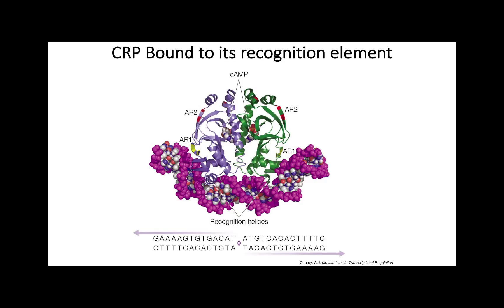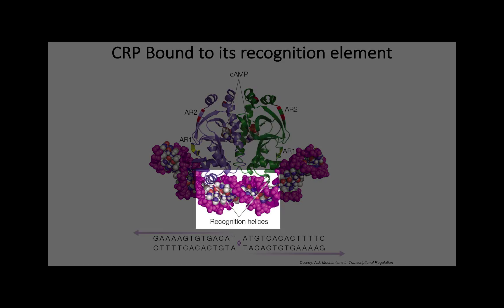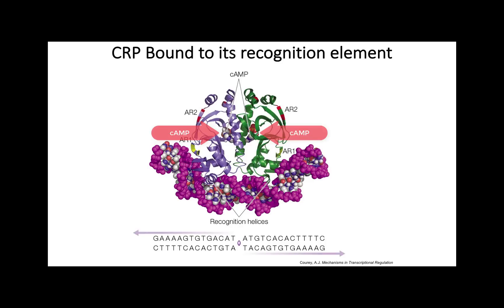Here we see the structure of CRP bound to the CRP site from the lac operon. Like most bacterial transcription factors, it binds to DNA as a dimer. We see two identical subunits, one in blue and the other in green, that come together via a dimerization interface. Each subunit has a recognition helix as part of a helix-turn-helix motif that binds in the major groove of the DNA. We can also see cyclic AMP bound to each subunit. CRP only binds to DNA when bound to cyclic AMP, because the cyclic nucleotide induces a conformational change in CRP that is essential for DNA binding.